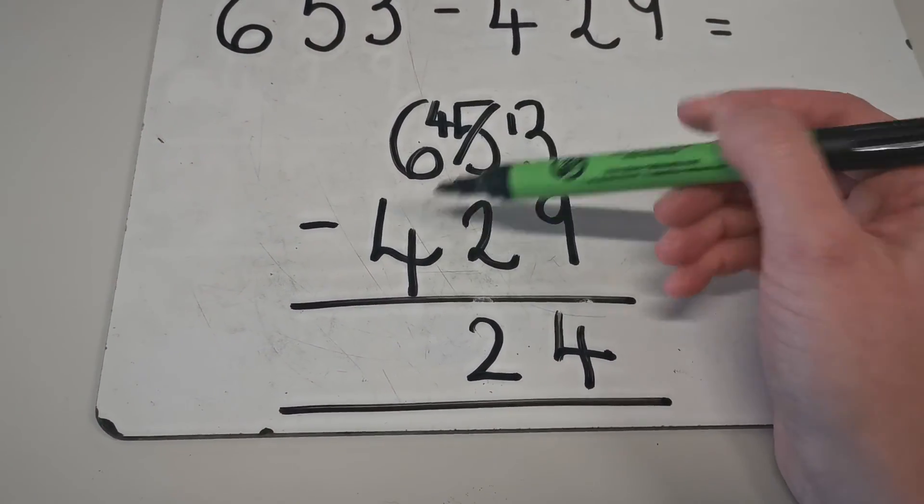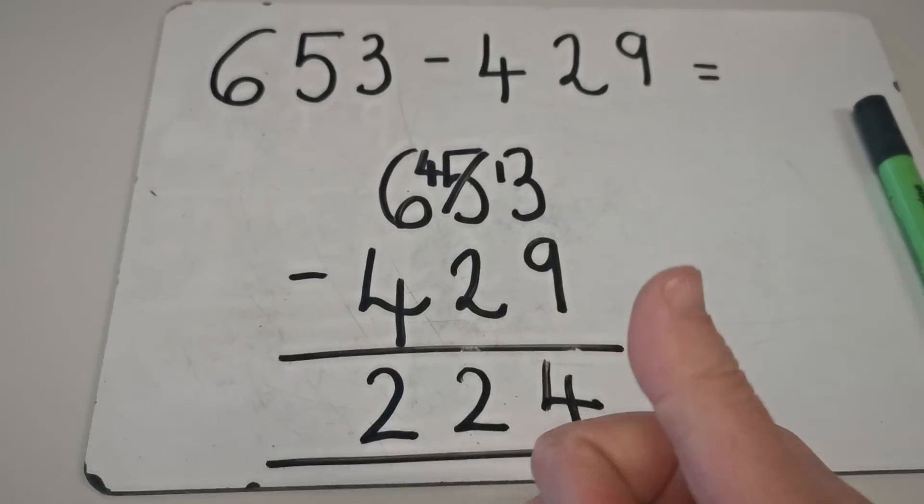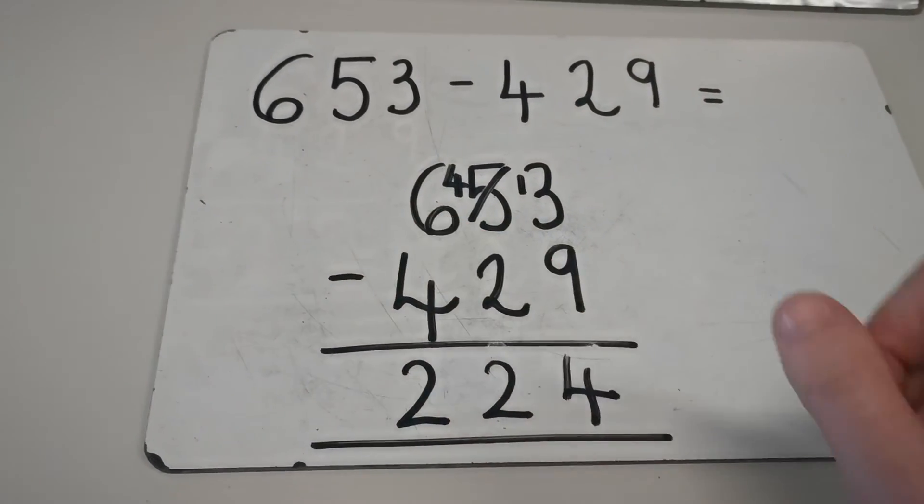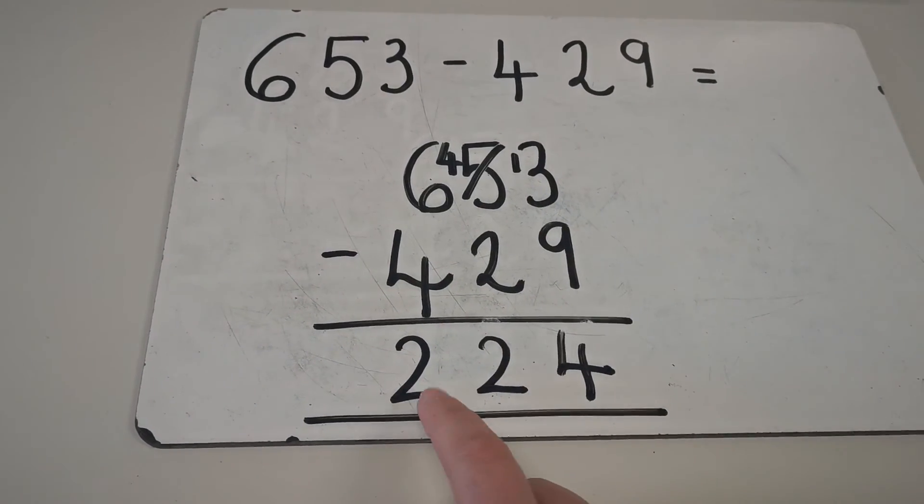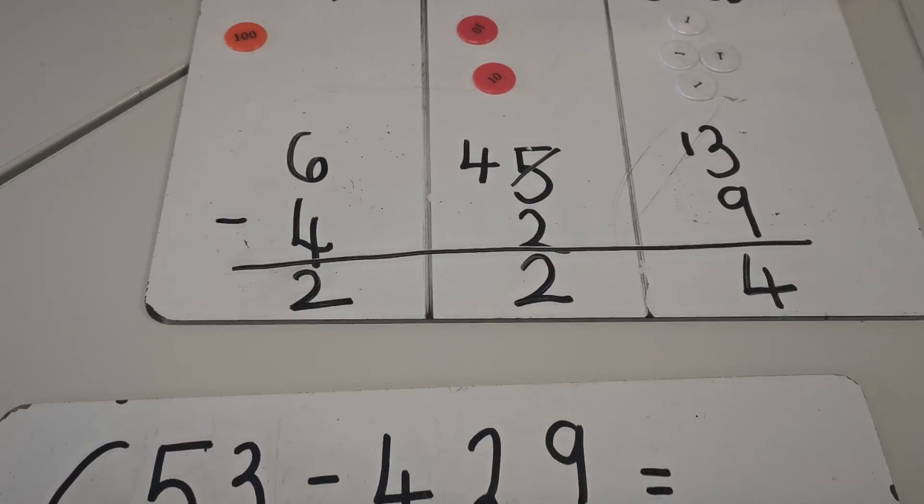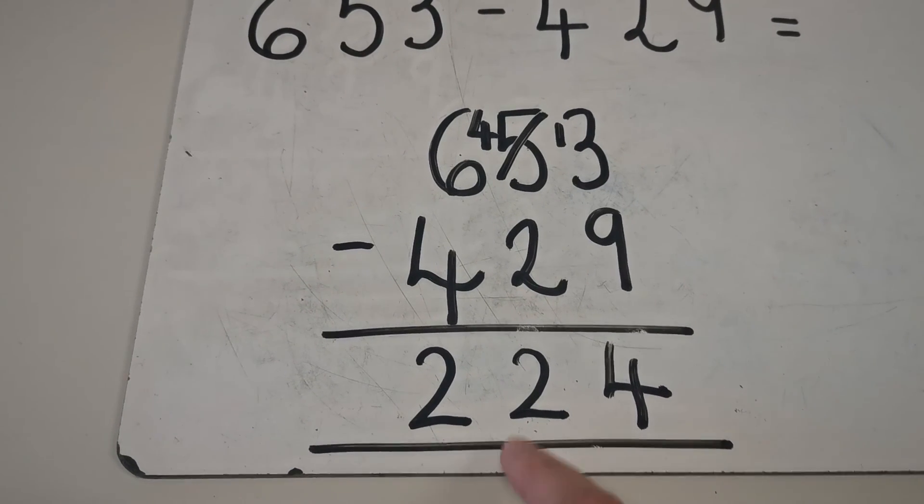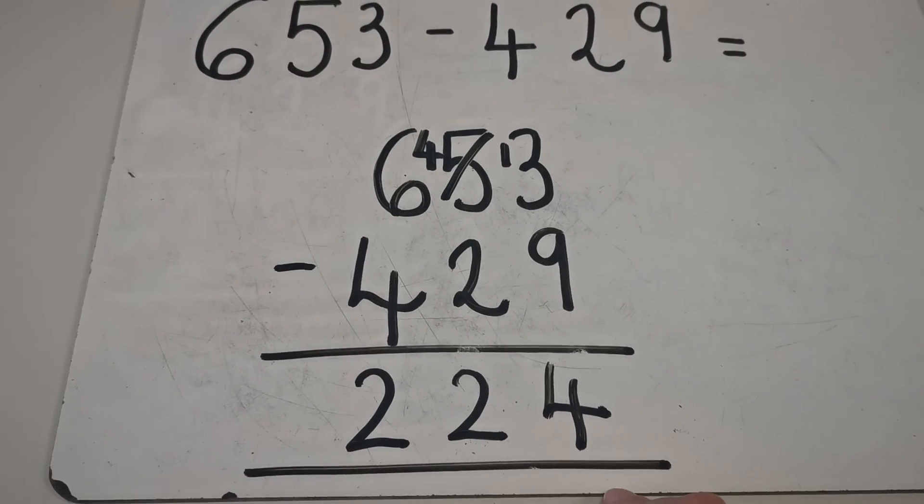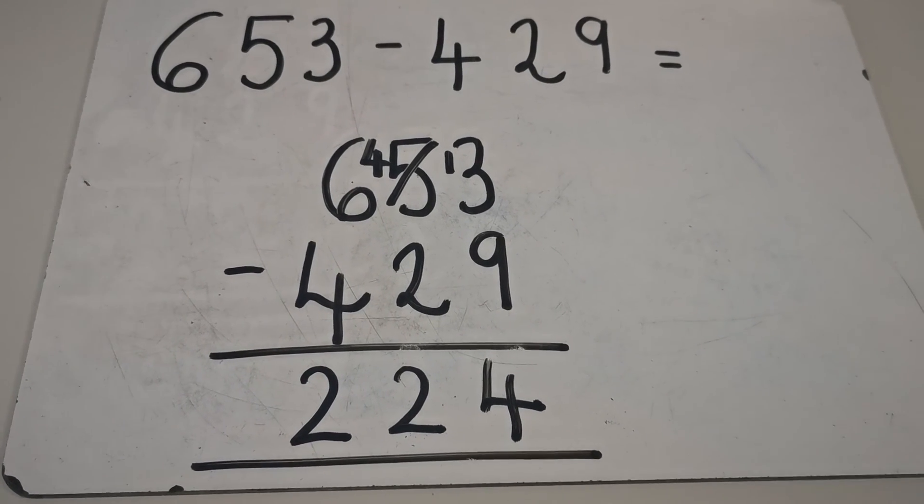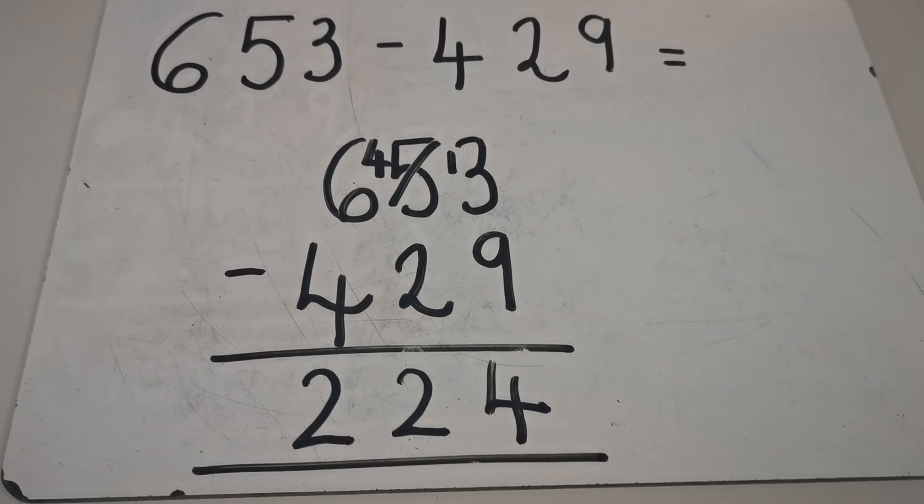Then I've got 600 subtract 400. I've got 6 and I go 4, 5, 6. I've got 200 left. So I came up with the answer 224 when I was doing it in my place value chart as you can see. And now when I've done the written method too, I've also got 224, so the answers match. I hope that makes more sense. I'm going to go away now and do a second example. I'll see you later. Take care. Bye.